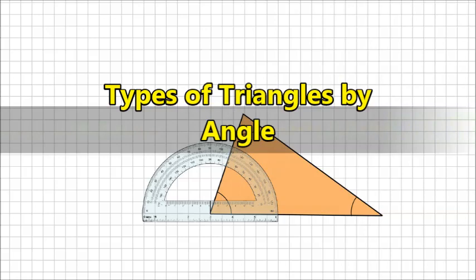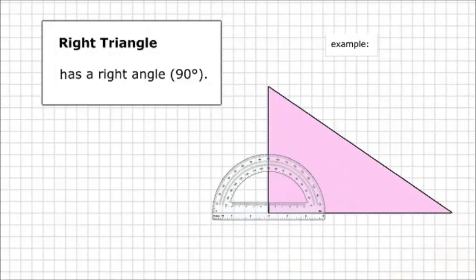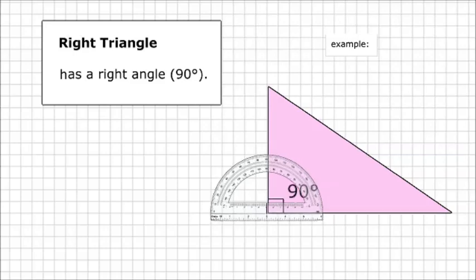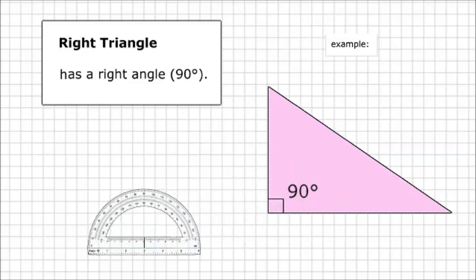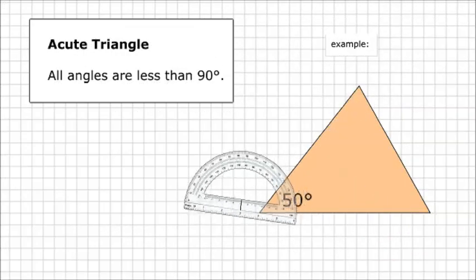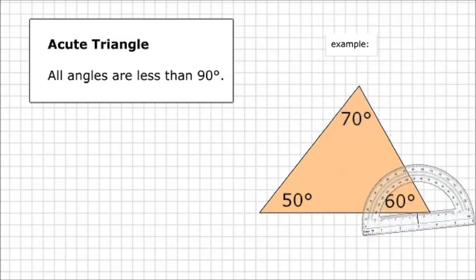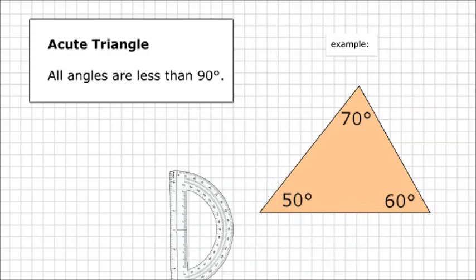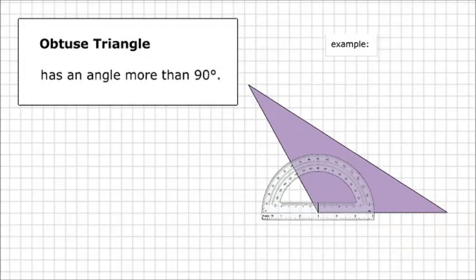Types of Triangles by Angle. Right Triangle: It has a right angle of 90 degrees. Acute Triangle: All angles are less than 90 degrees. Obtuse Triangle: It has an angle more than 90 degrees.